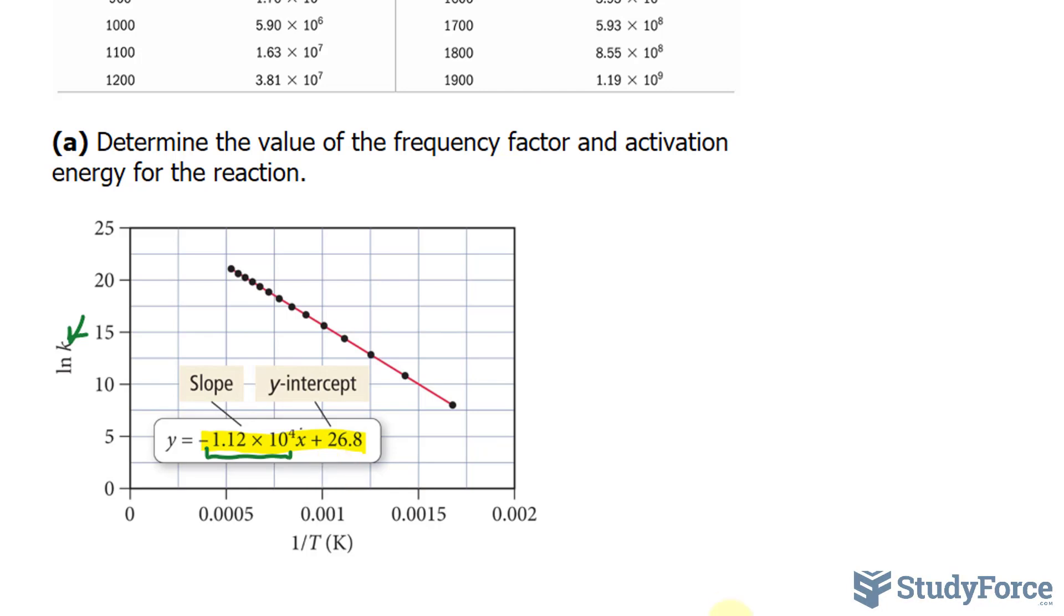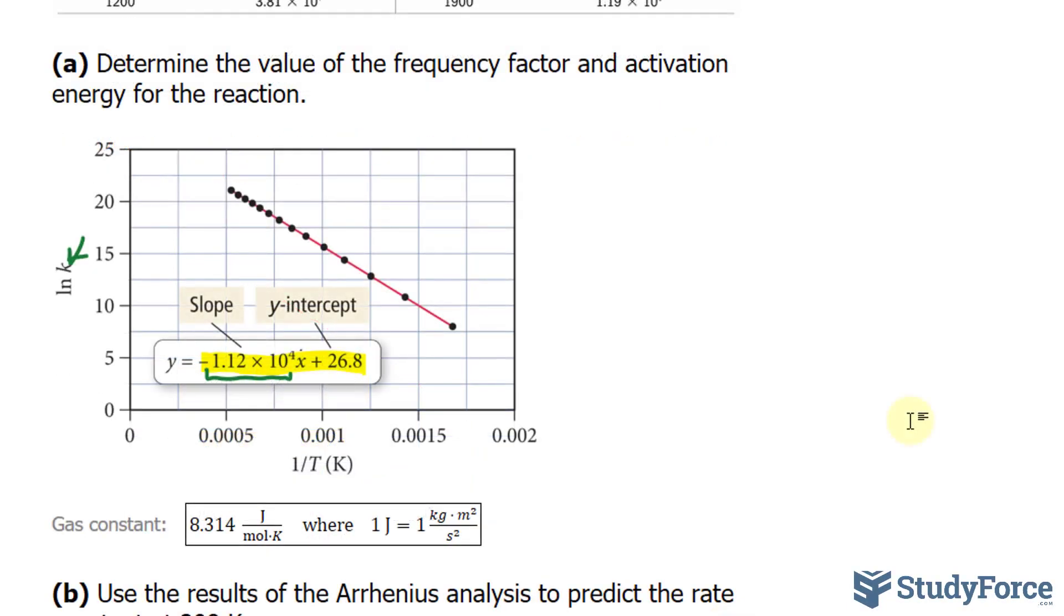From here, we can calculate the activation energy from the slope by setting the slope equal to negative Ea over R and solving for the activation energy. And in case you forgot, R represents the gas constant 8.314.